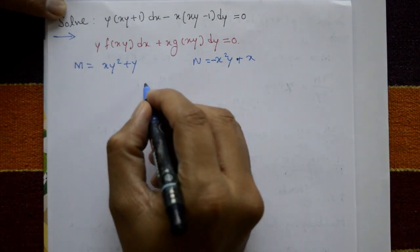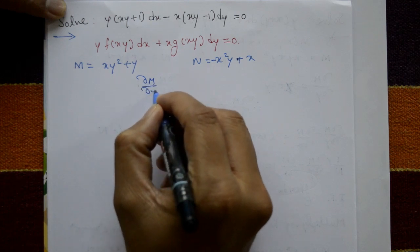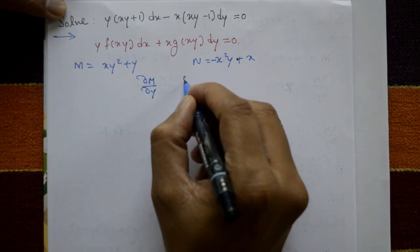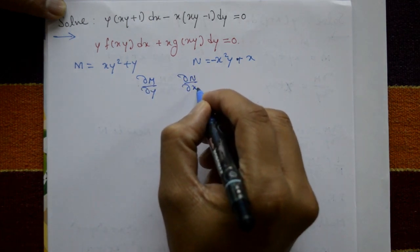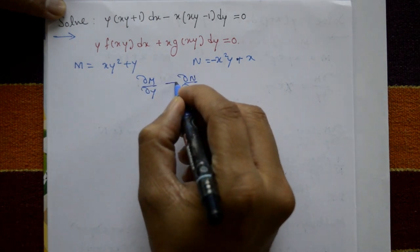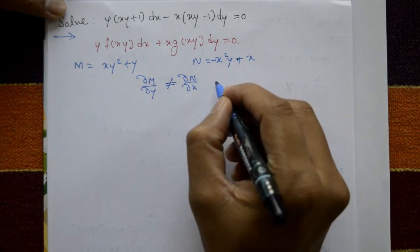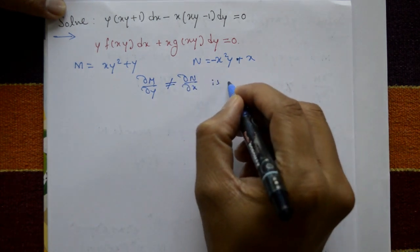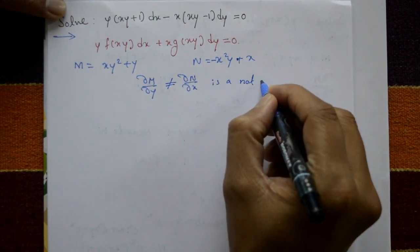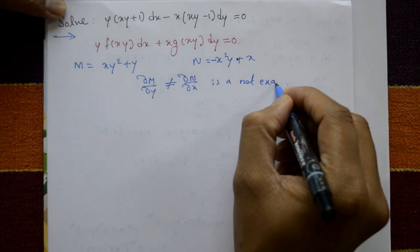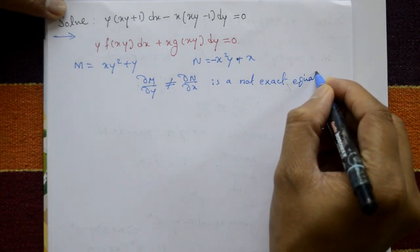Differentiate M with respect to y and differentiate N with respect to x partially. These two are not equal, which means the equation is not an exact equation.